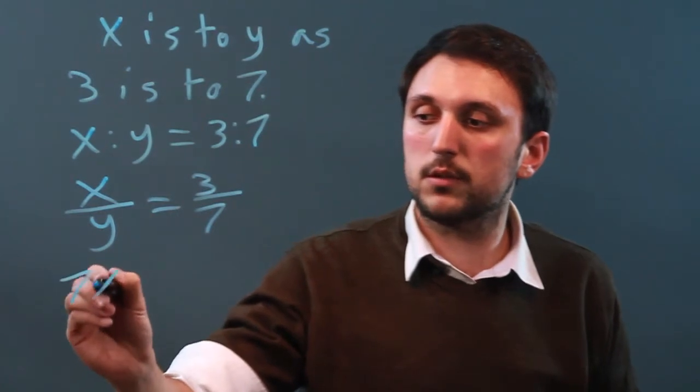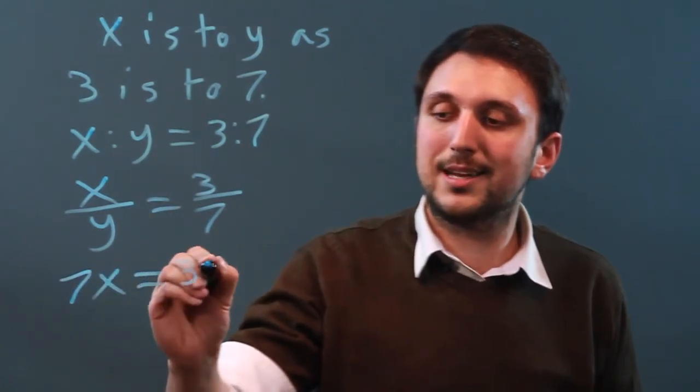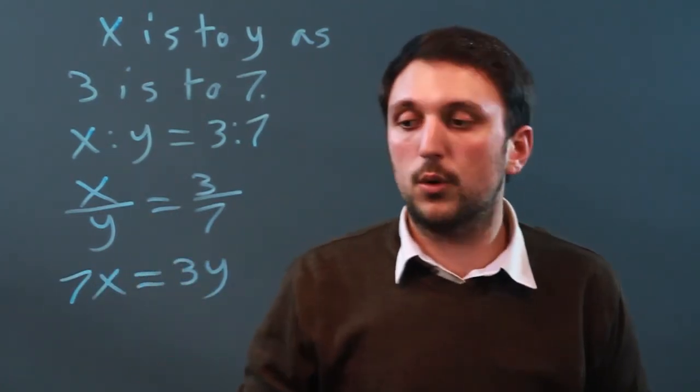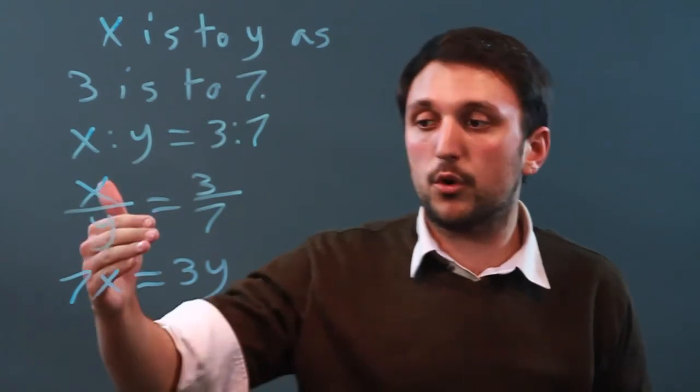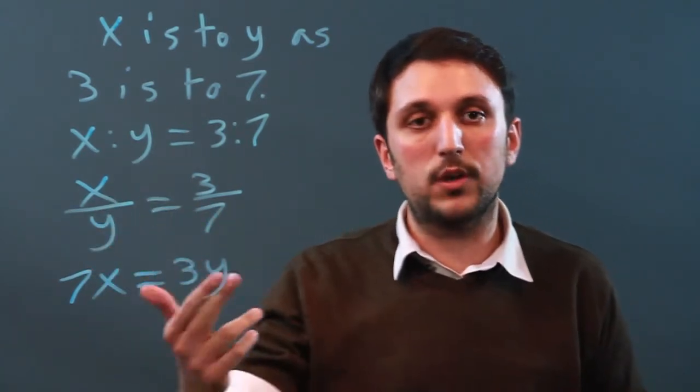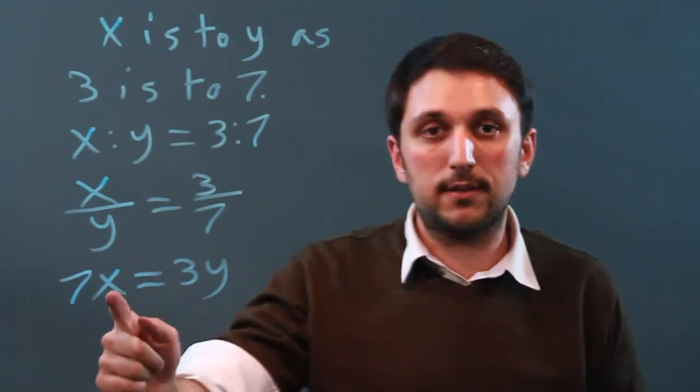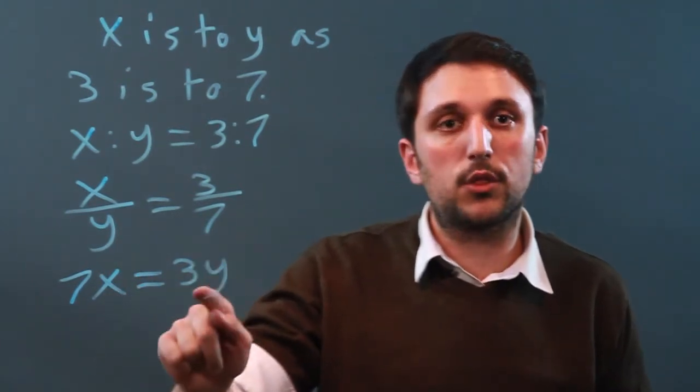7 times x equals 3 times y. No matter what, the proportion will always stay constant. That's why it's called a proportionality constant. For every 7x, there's going to be 3y.